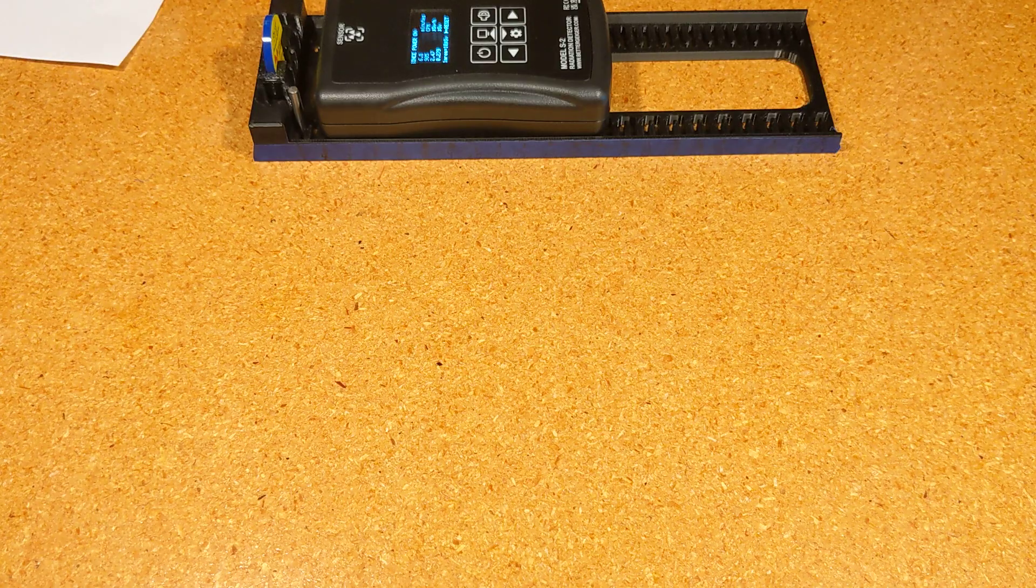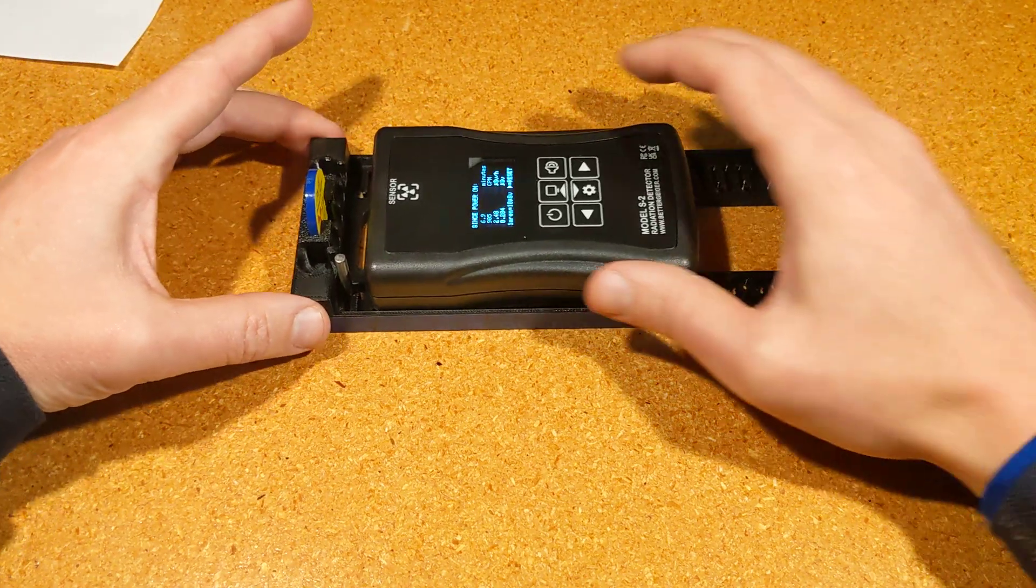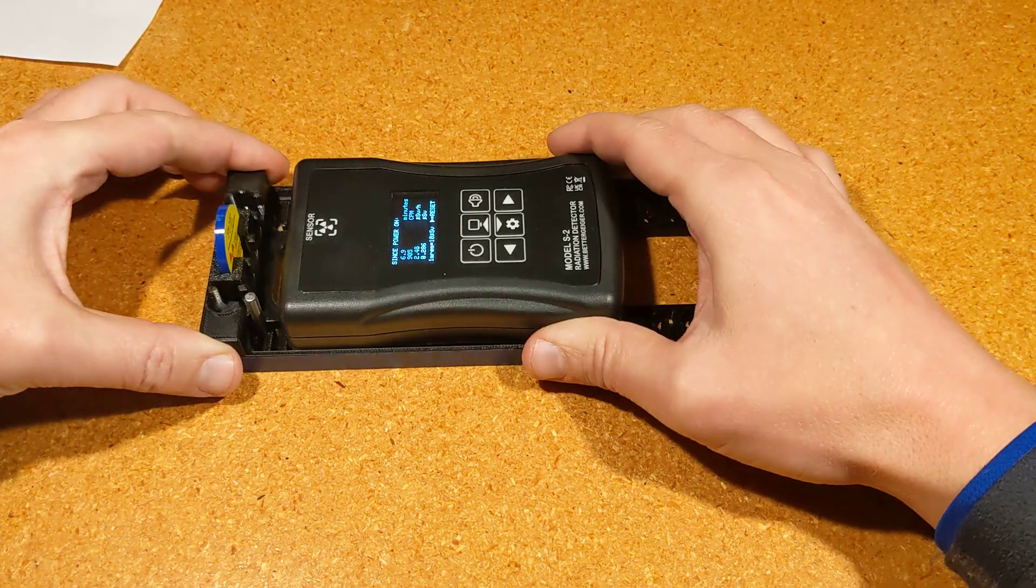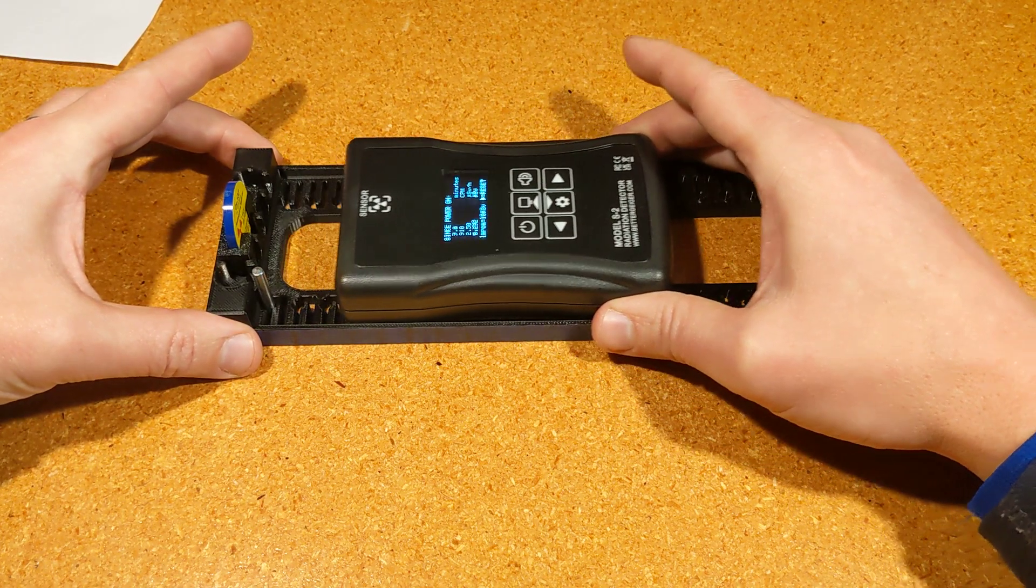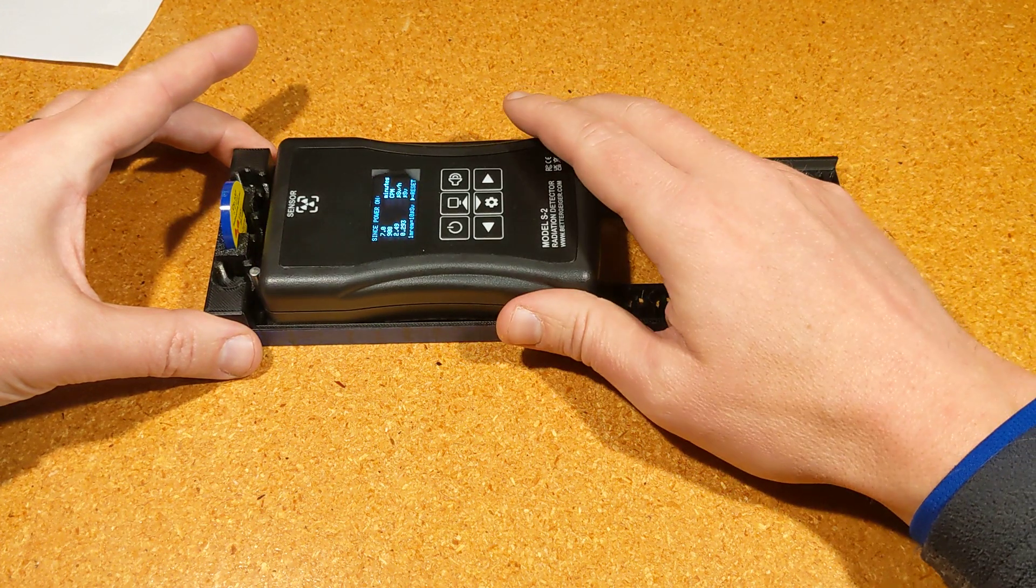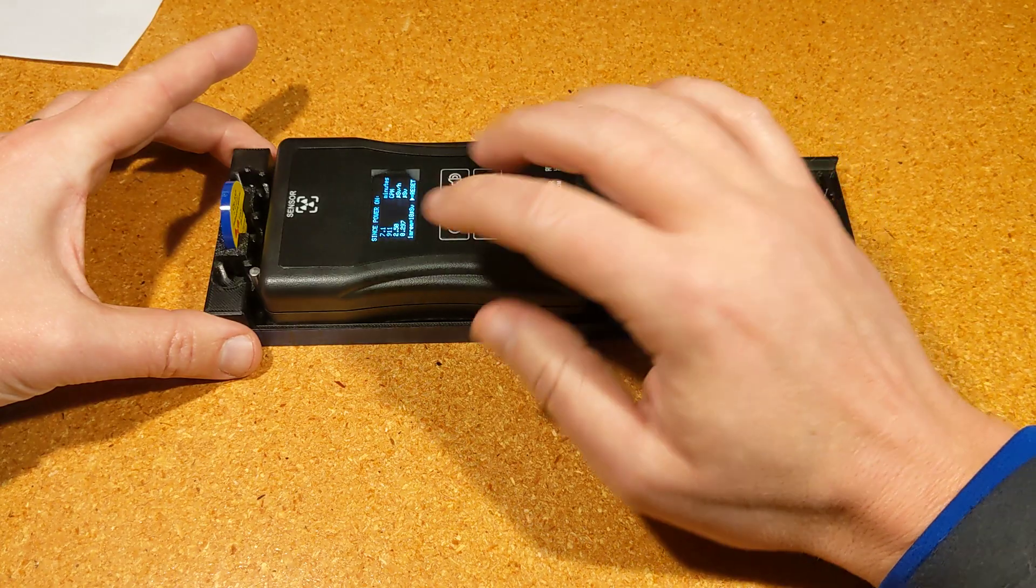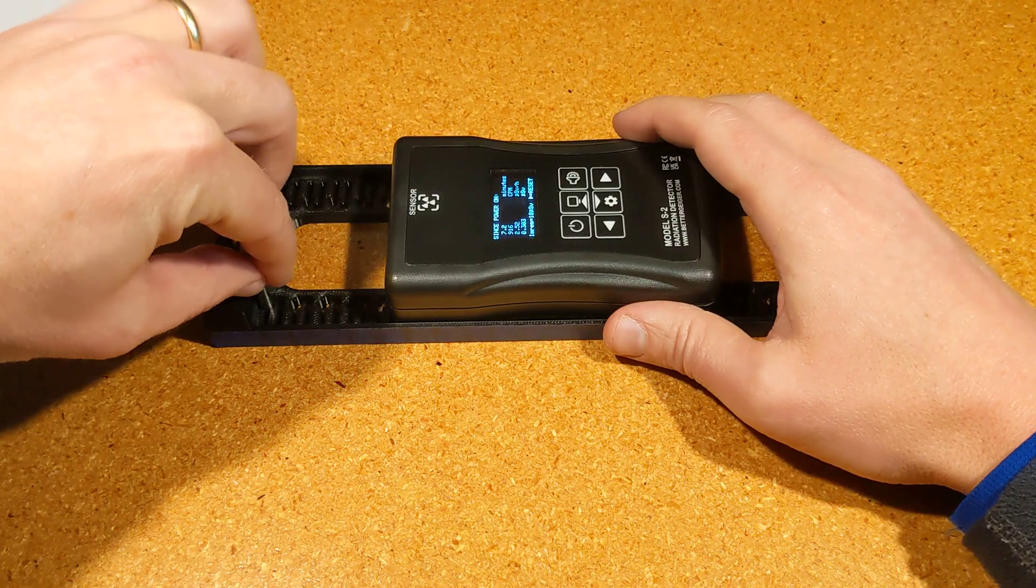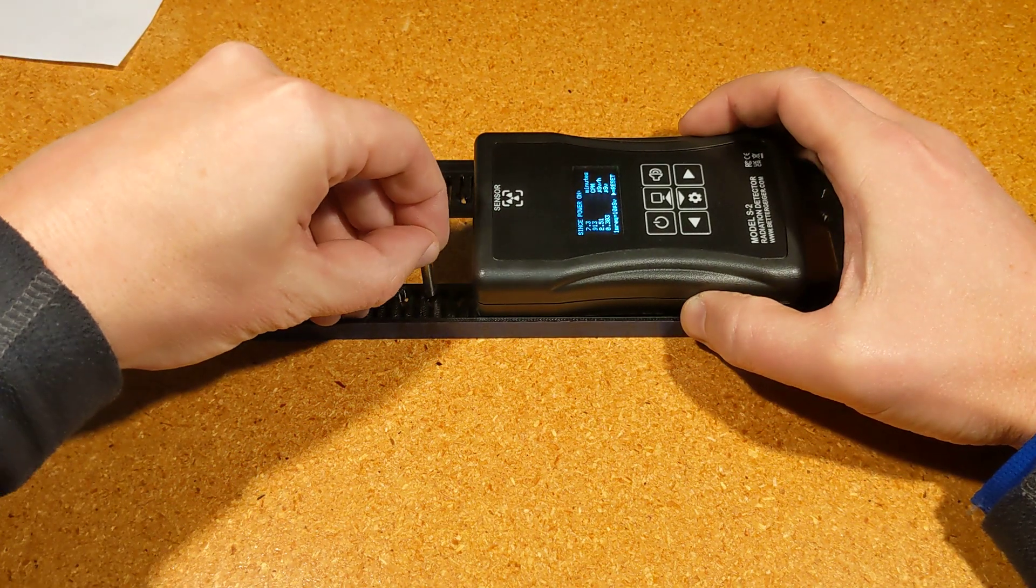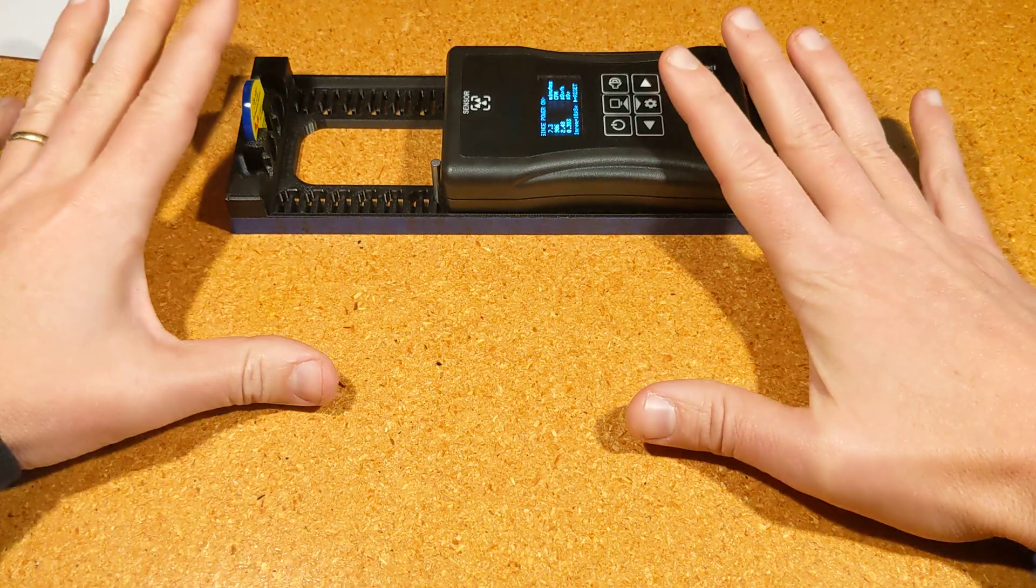That's basically the very quick and dirty explanation of the math. Now we can talk about what this test shows. I didn't do it on camera because it would take too much time, but I basically put it at 3 centimeters, 6, 9, 12, and each time I let it measure for about five minutes or so to make sure that the measured count rate averaged over that time is pretty accurate.